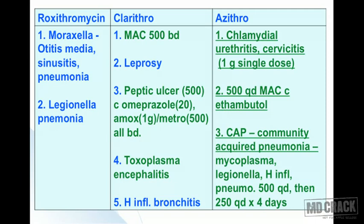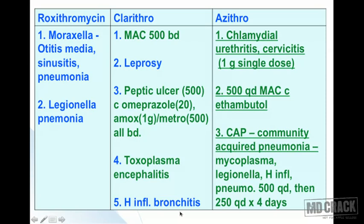To revise the triple therapy for peptic ulcer: clarithromycin 500 mg twice daily, omeprazole 20 mg twice daily, and amoxicillin 1 g twice daily or metronidazole 500 mg twice daily. Additional important indications for clarithromycin include toxoplasma encephalitis and H. influenzae bronchitis. To summarize clarithromycin: MAC, leprosy, peptic ulcer, toxoplasma encephalitis, and H. influenzae bronchitis.